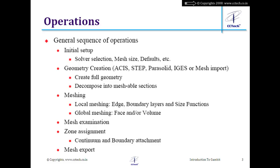After meshing, examine the mesh to check its quality. Then assign zones — continuum and boundary. Continuum defines which region is solid and which is fluid, for example in conjugate heat transfer with a heat exchanger where we model the pipe thickness. We also specify which face is inlet, outlet, wall, or interior (used only for geometry decomposition). That is zone assignment.